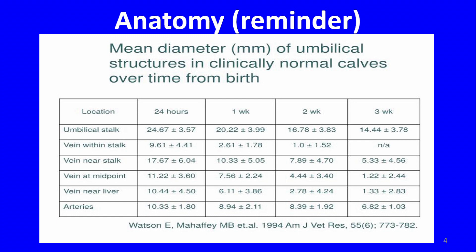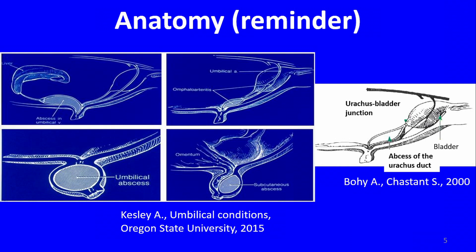What did we want to see in pathological condition? You have here different structures: external structures like umbilical abscesses or subcutaneous abscesses, and internal pathological structures in front of the liver — the umbilical vein with abscesses — and backwards, abscesses of the urachus or the arteries. You also have to check non-inflammatory lesions such as hernias, and ultrasonography is very useful in this indication.